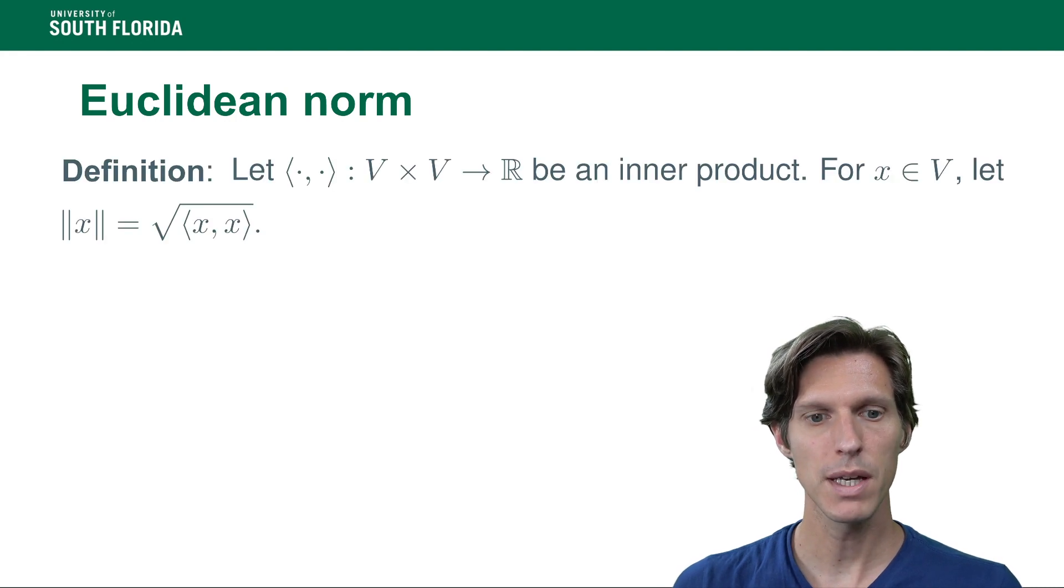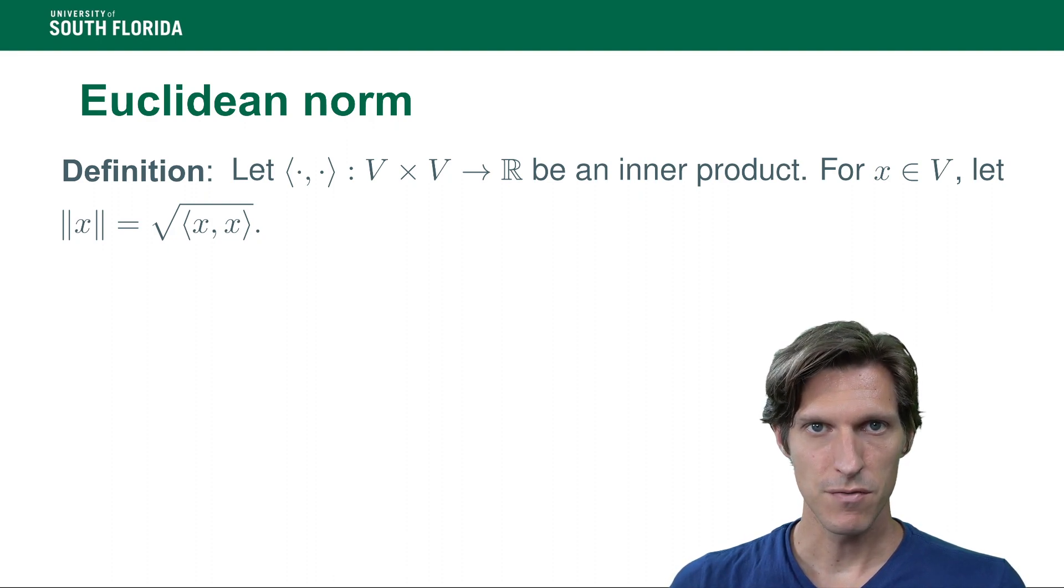From that we can get a norm. A norm is defined on elements of V and it's the square root of the inner product of x by itself.